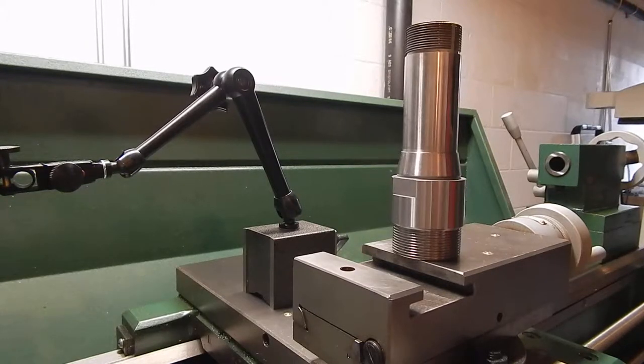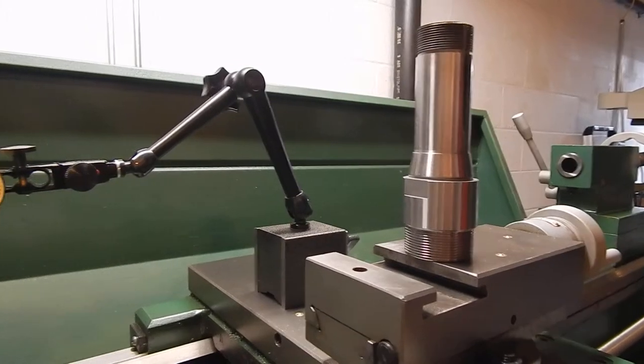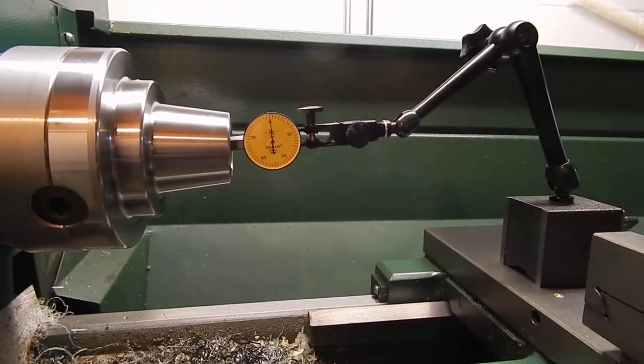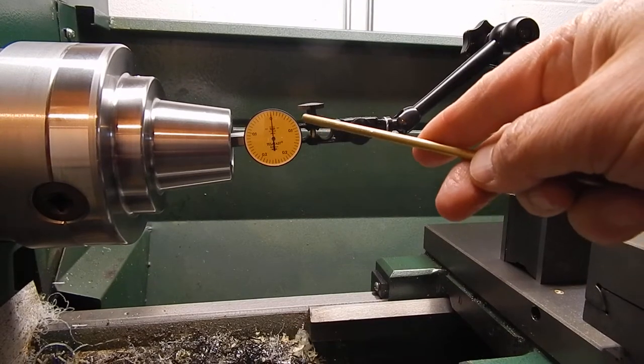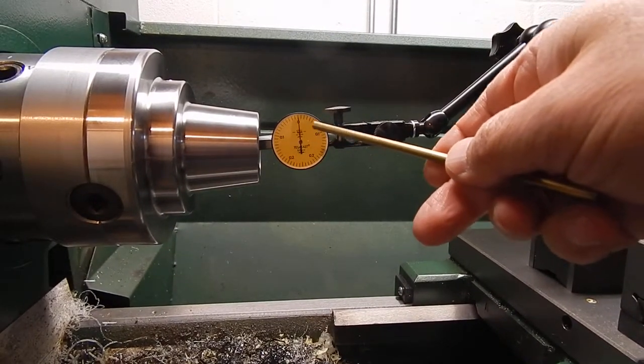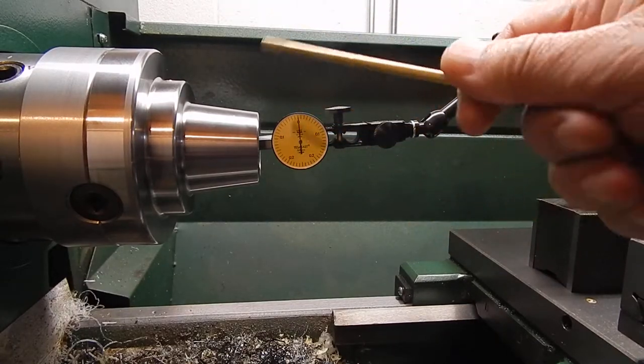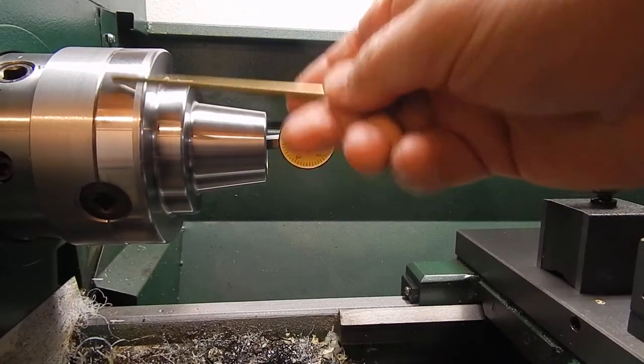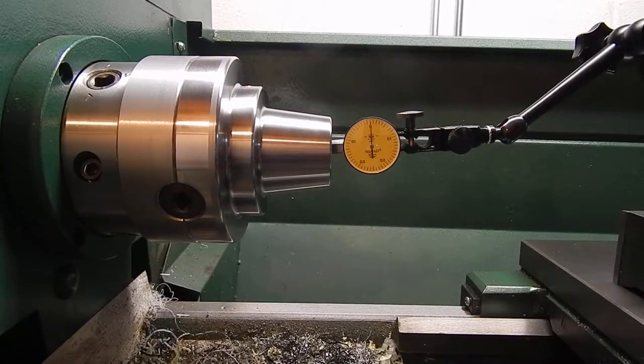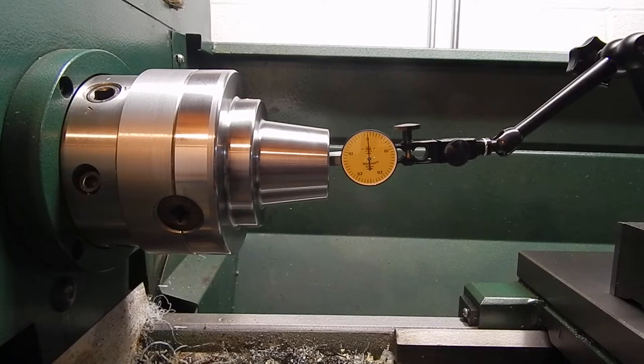This is my setup: an indicator, this is one hundredths of a millimeter per division, and this is a 5C chuck. Let's check how this chuck is set up because that's important.